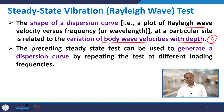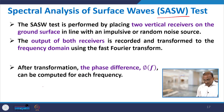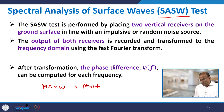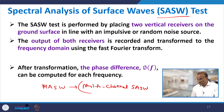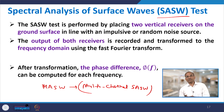Continuing with steady state vibration, there is another version called spectral analysis of surface waves, abbreviated SASW. There is also a version called MASW — multi-channel SASW — which uses more channels. MASW and SASW are essentially the same; the only difference is that MASW uses a greater number of channels.